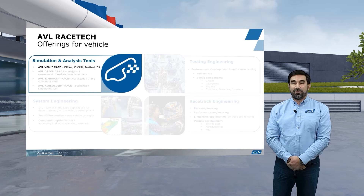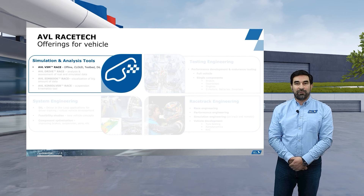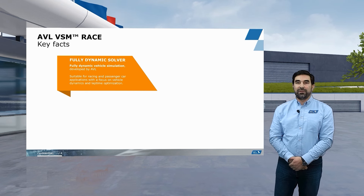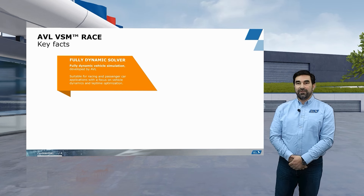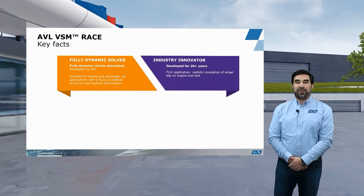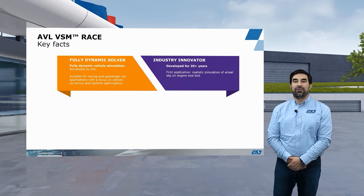Let me start with VSM Race, which is our fully dynamic vehicle simulation that we can use for various applications — the offline PC or laptop application, the cloud application, use on testbeds, or even on the driving simulator. This software features a fully dynamic solver with a proper driver model inside, and is specially suitable for racing and passenger car applications with a strong focus on vehicle dynamics and lap time optimization. VSM Race has been developed in-house at AVL Racetech for more than 20 years. Its first application was actually to provide a realistic simulation of wheel slip on an engine testbed, so the birthplace of VSM was the testbed, and then it found its way into other applications.